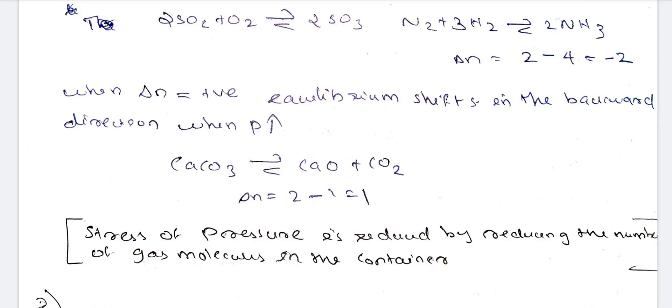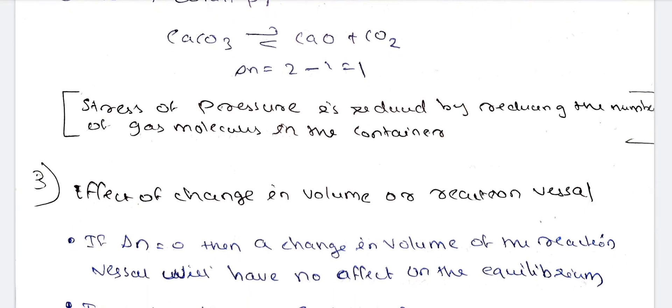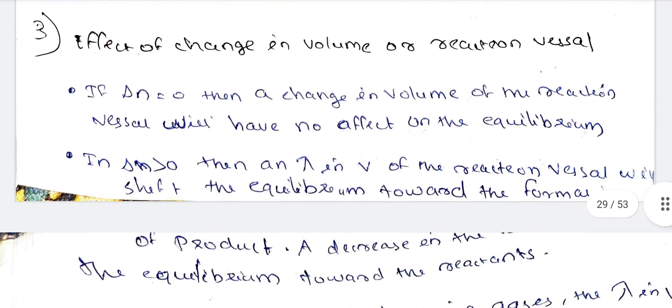So CaO plus CO2 giving CaCO3 is more probable — meaning CaO plus CO2 converts to CaCO3. The stress of pressure is reduced by reducing the number of gas molecules in the container. Now we will look at the effect of volume, or the reaction vessel. If delta N equals zero, the change in number of moles is zero, and a change in the volume of the reaction vessel will have no effect on the equilibrium.